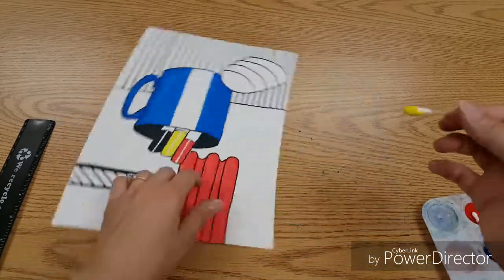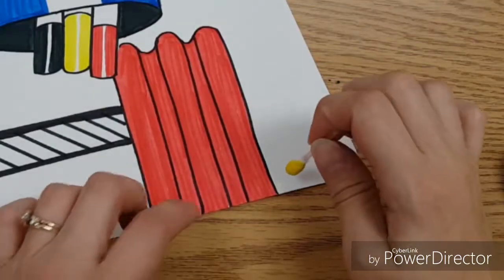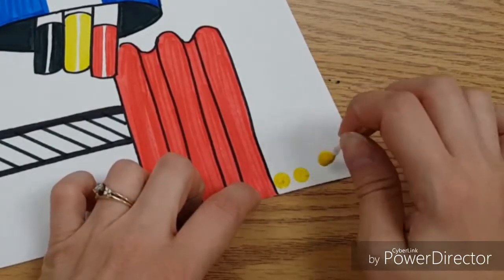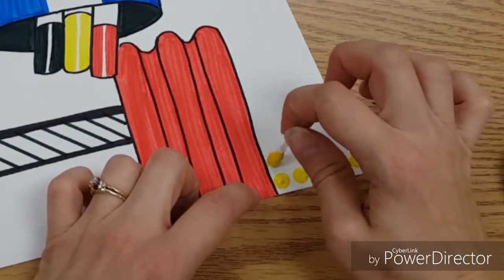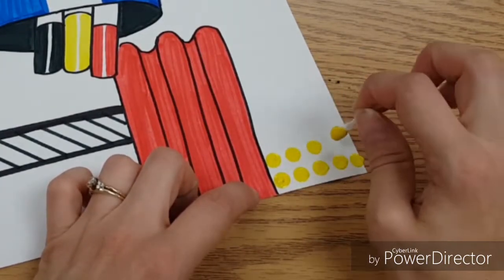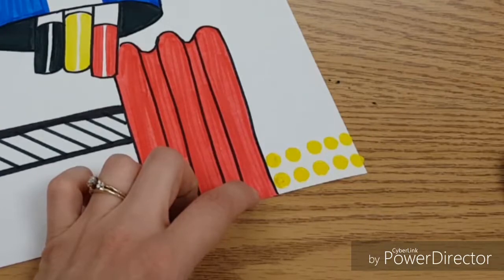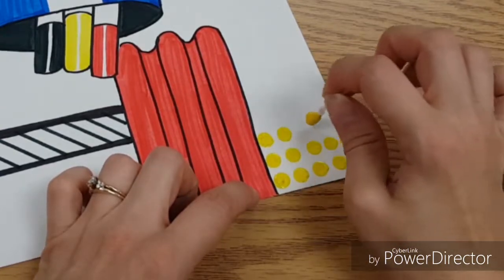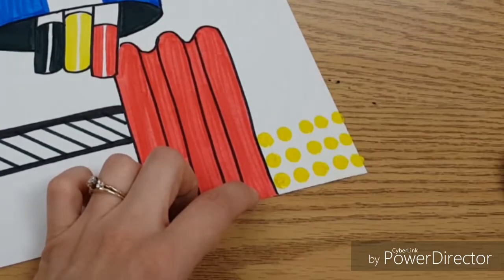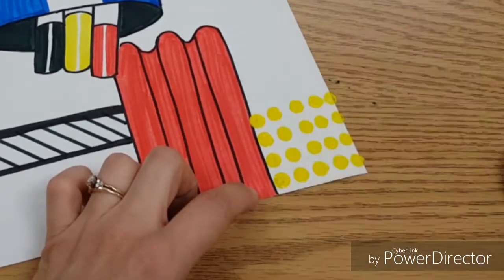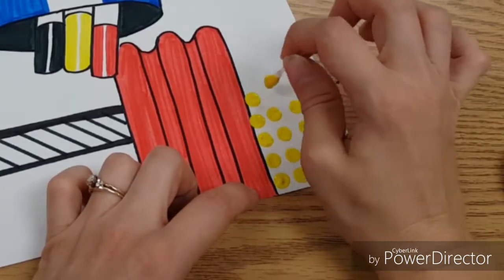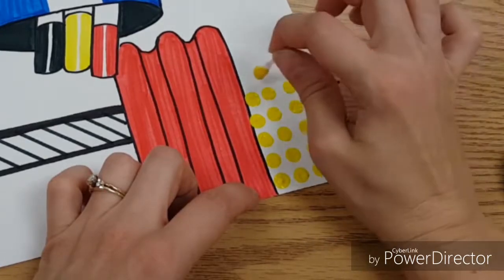I'm going to add polka dots, like Roy Lichtenstein did. We're using a Q-tip and paint. Just bounce straight up and down. Roy was very careful when he made his work, so our polka dots are going to be in nice, neat rows. Remember, you only do them after you're done with all your marker work, and keep your dots from touching each other. There should be space in between them.